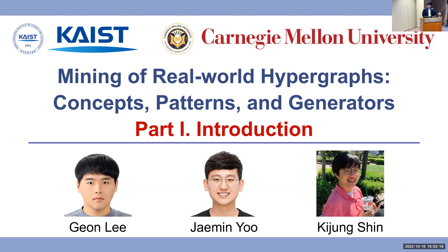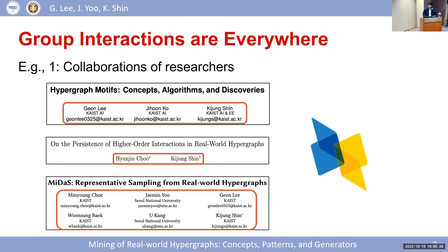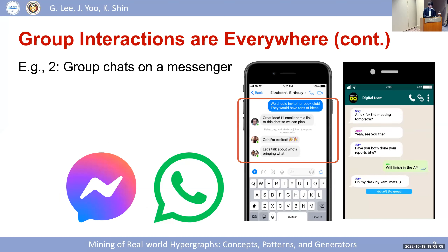Let's start with some intuitive examples. In real-world scenarios, how do we interact with others? Consider publishing a paper: we often co-work as a group with lab members, advisors, or colleagues. Such collaboration of a group of multiple researchers can be any size — any number of researchers can co-work together and form a group. These three papers introduced in this tutorial are each co-authored by different numbers of people. We also communicate as a group in online chatting platforms such as WhatsApp or iMessage, belonging to different chat rooms consisting of groups of friends, family members, or project teams.